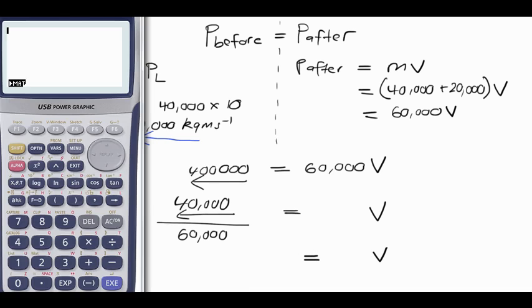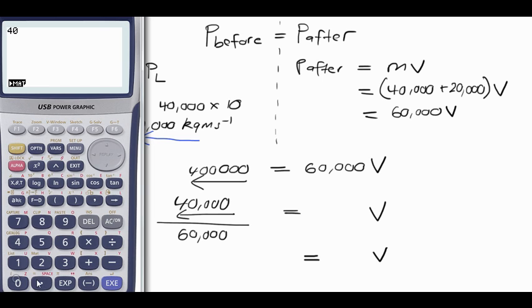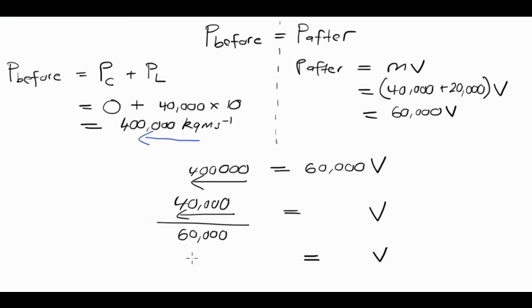And the final step is to work out what that is. Now, 400,000 divided by 60,000 is equal to 0.667. We'll just keep that at 0.67 meters per second.